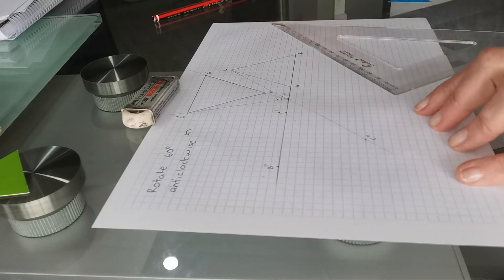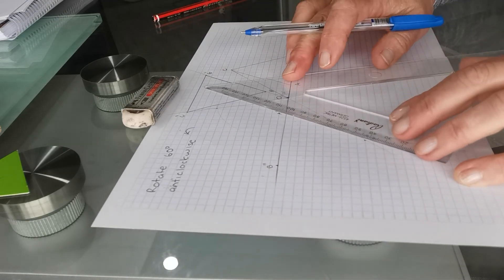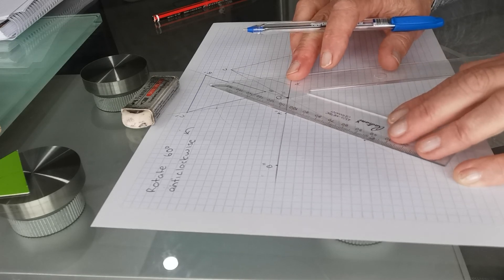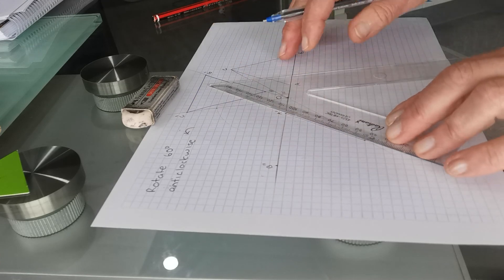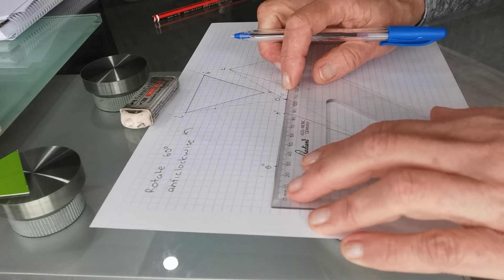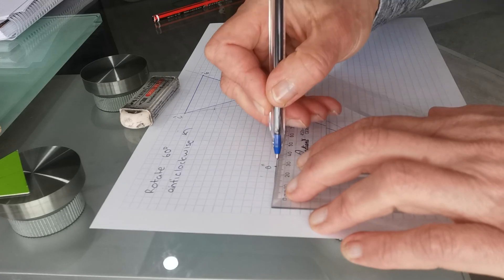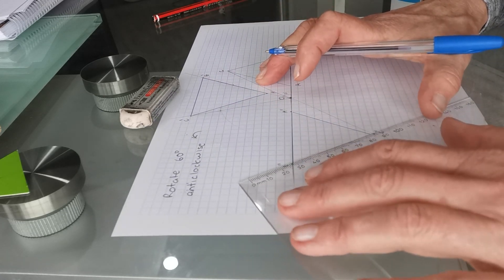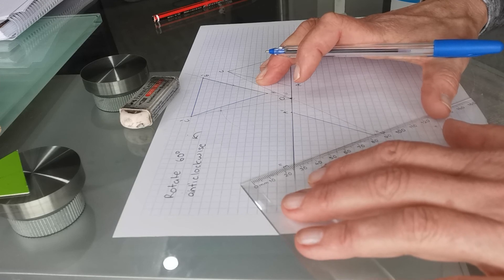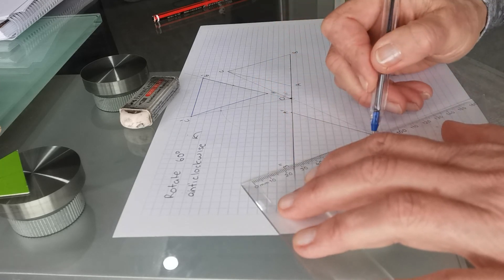So joining those with blue, this here is 180 degrees rotation in an anti-clockwise direction. And we have the image shape.